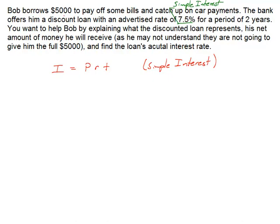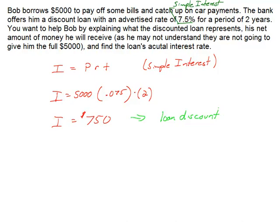So what's the interest on this $5,000 at 7.5% for two years? Well, that's going to be $5,000, convert the percentage to a decimal so that we can multiply, 0.075, and our time was for two years. So when we put this into a calculator, we'll find that the interest is $750, and we actually give this a name. This is going to be what's called the loan discount.